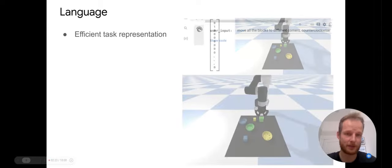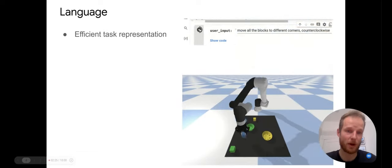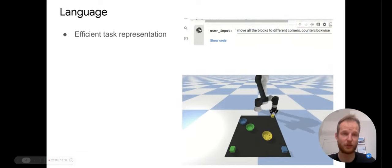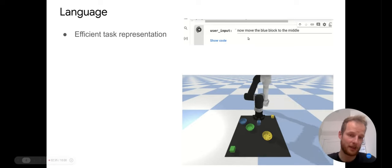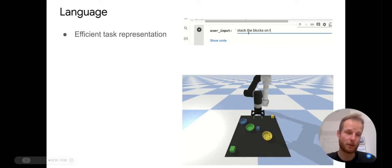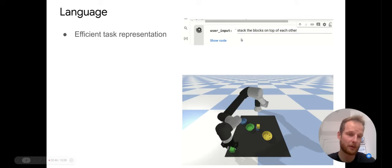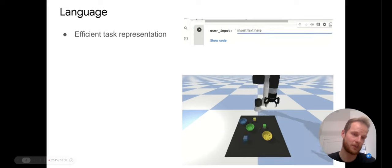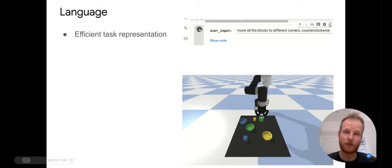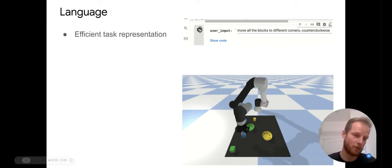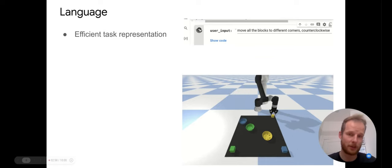However if we use language instead — just describing to the robot what we want it to do, for instance 'move all the blocks to different corners counterclockwise' and then 'move the blue block to the middle' — language itself is a quite efficient representation of the task that already has all these different similarities embedded in it. Things such as 'blocks' or 'moving block' or 'corner of the table' repeat themselves as we describe different tasks, providing a much better representation so the robot can already see how these tasks relate to each other.